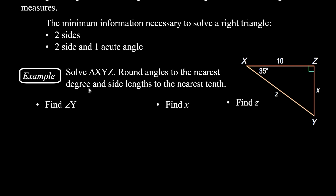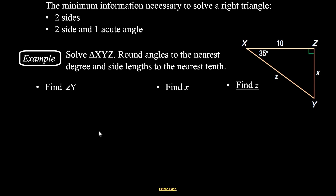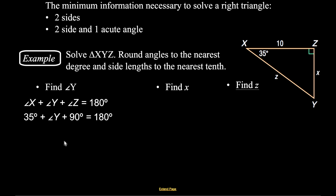This example says solve triangle XYZ, rounding our angles to the nearest degree and side lengths to the nearest tenth. The easiest piece is to find angle Y. We know angle Z is 90 degrees and angle X is 35 degrees. Since the sum of the three angles is 180, if we substitute in 35 and 90 and subtract from 180, we end up with angle Y being 55 degrees.